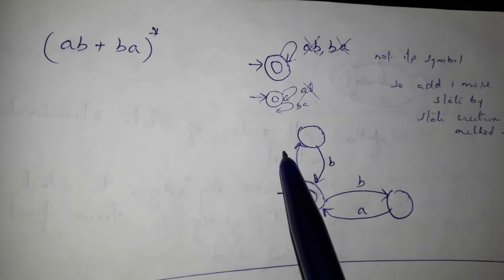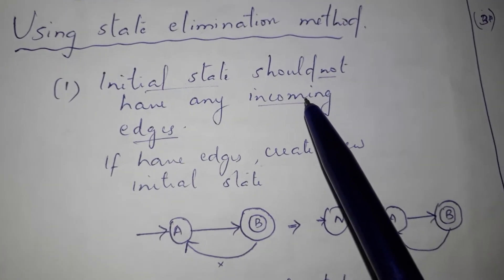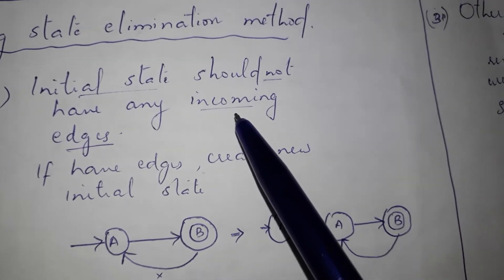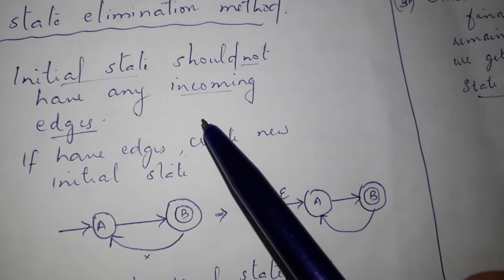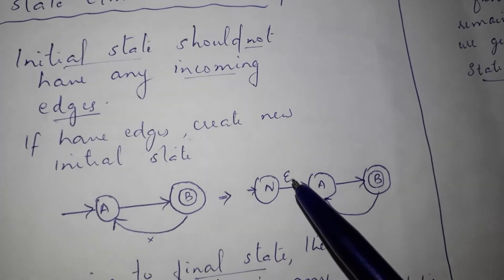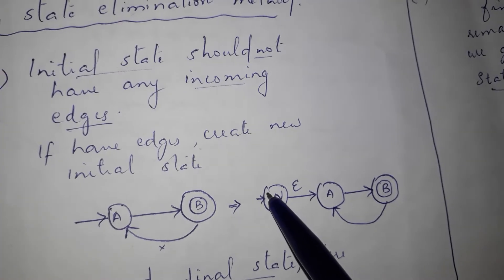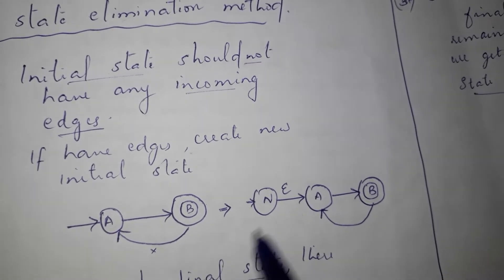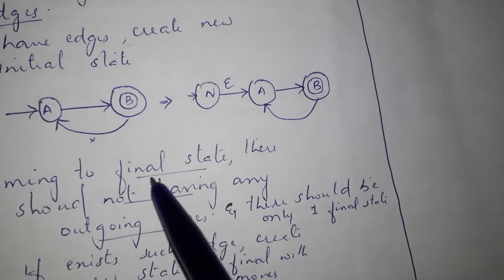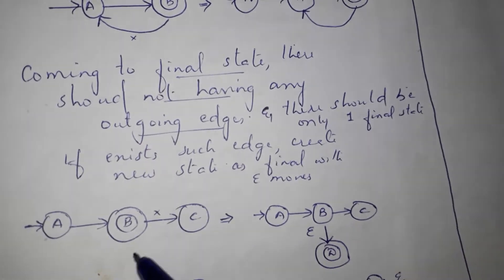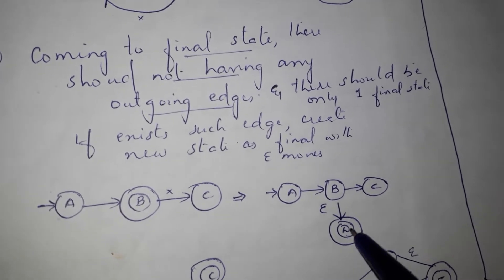We will revise the state elimination method. In the state elimination method, I have already done 4 steps. First, if there is an incoming edge in the starting state, you can create a new starting state with an epsilon transition. Second, if there is an outgoing edge in the final state, you can also write an extra state. In the final state, there is an epsilon, and from there, there is an epsilon to the starting state.